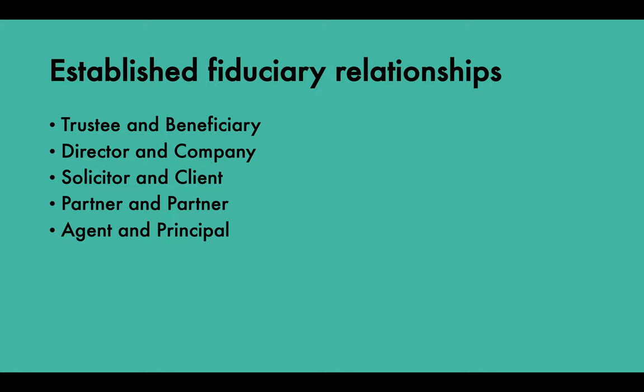There are a number of well-established fiduciary relationships: the trustee and beneficiary, the director and the company, the solicitor and the client, the partner and partner, and the agent and the principal. The trustee-beneficiary relationship is the leading fiduciary relationship, adopted with modifications to other relationships. The trustee is bound not only to act on behalf of the beneficiary but also required to subordinate his own interests to those of the beneficiary. In cases of conflict, the beneficiary's interest comes first.